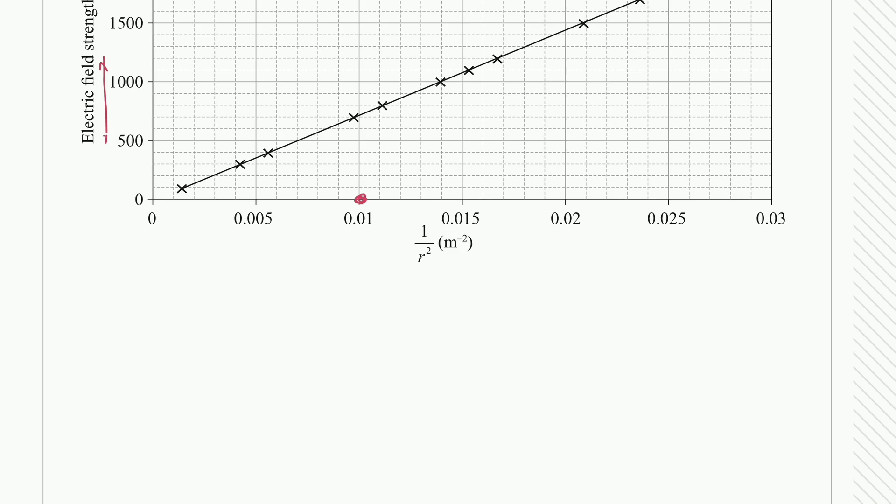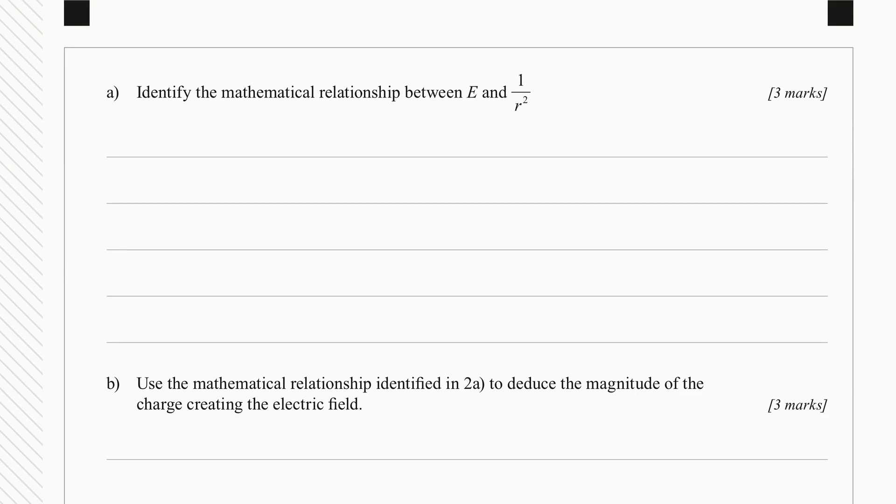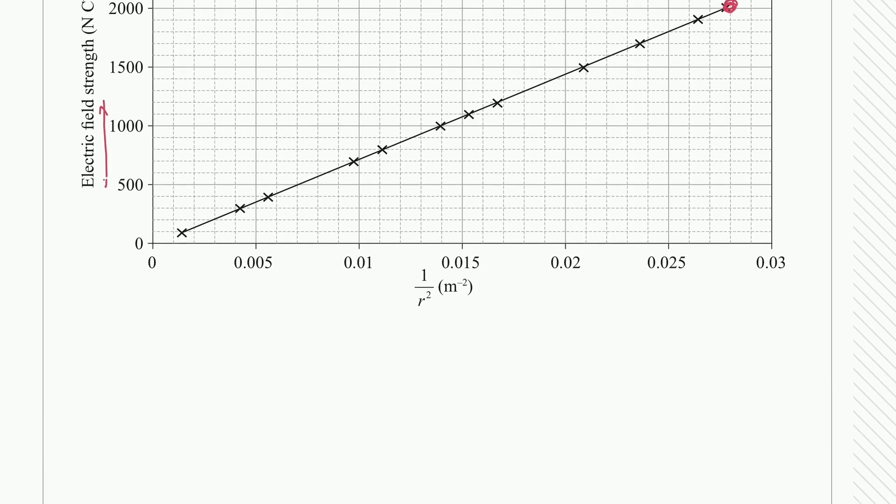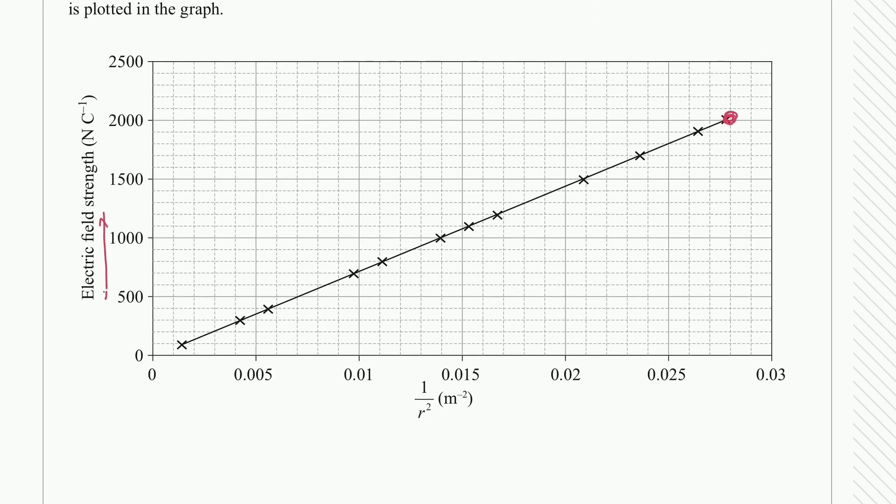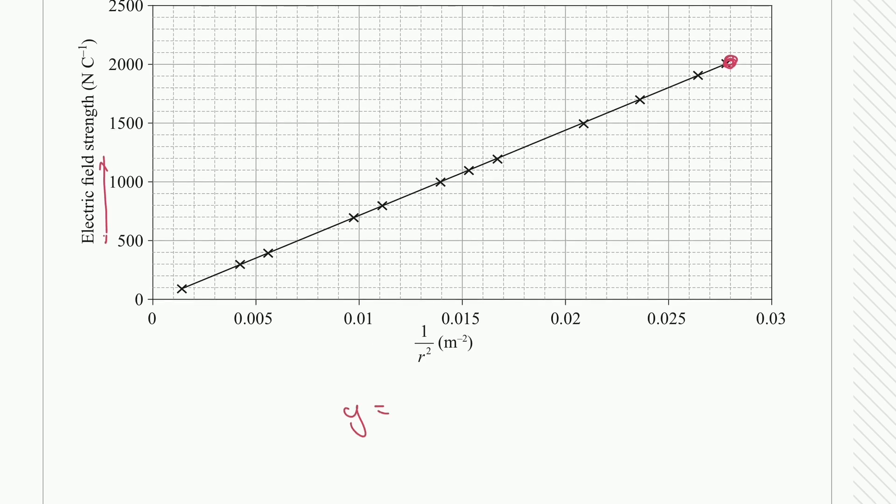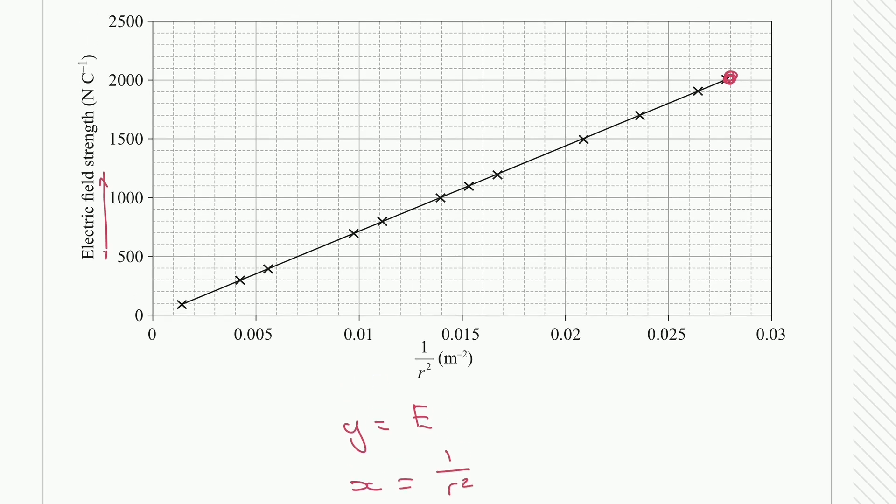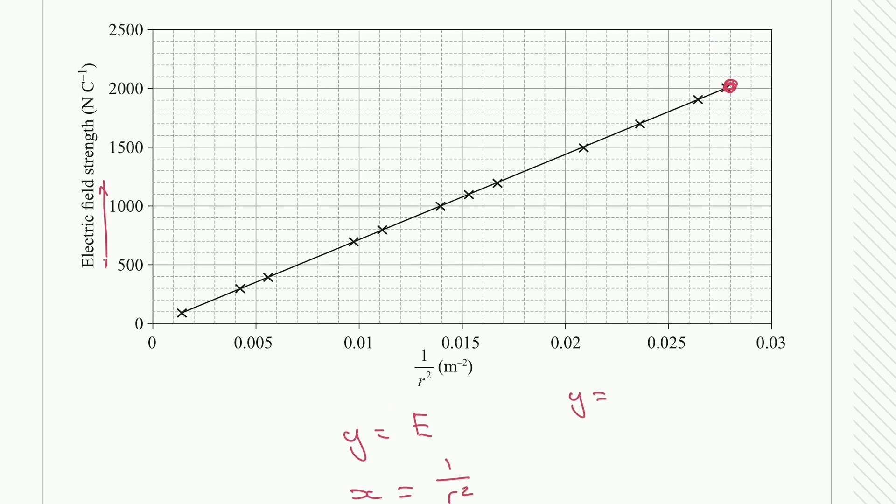With a question that is asking us for a mathematical relationship we need to put down a formula. We want a mathematical expression. So what I want to write down straight off the bat is what our y is. Y is equal to E, our electric field strength. X on the other hand is equal to our 1 over r squared. And looking at this graph we have a very straightforward y equals mx plus c, so a very straightforward linear equation.